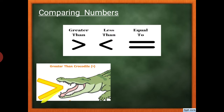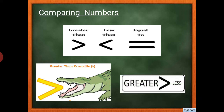As I told you before, think of it like a crocodile's mouth — the mouth always opens towards the bigger number, because the crocodile is going to eat whichever number is bigger. So if this side is greater, the mouth opens towards that side.